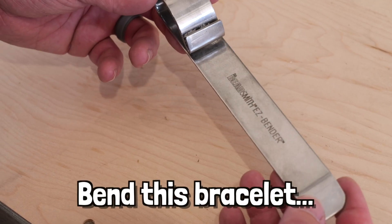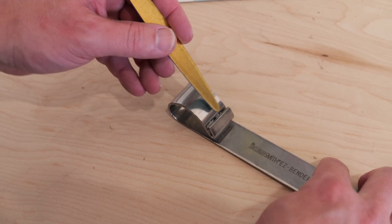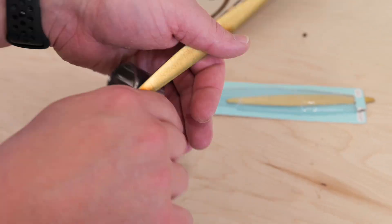So in order to bend this bracelet, we'll be using this tool. How it works is you put one end of the bracelet in and then bend it around the curve, and you do this on both sides.